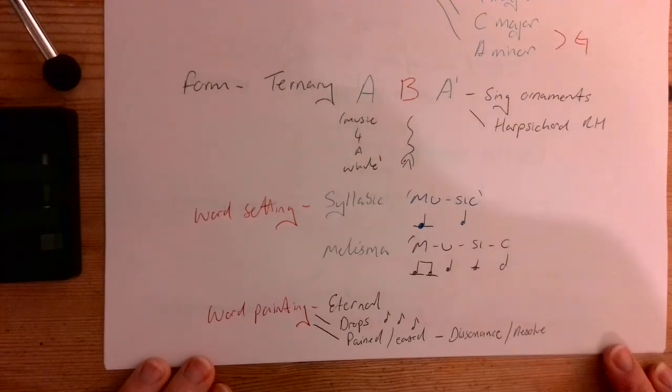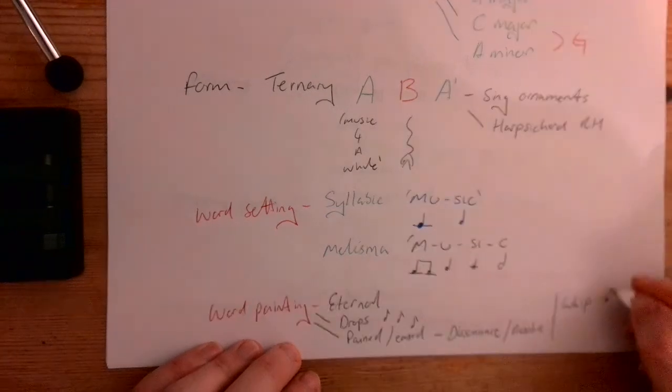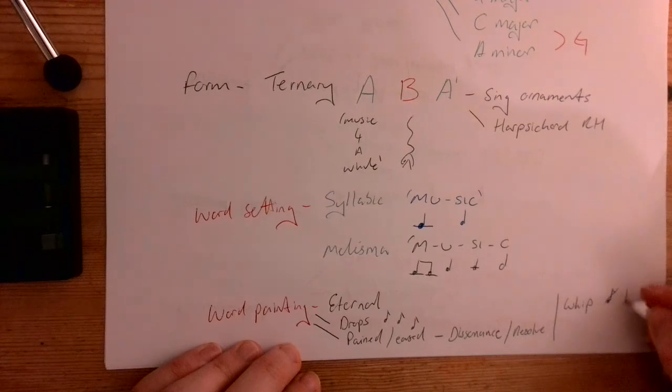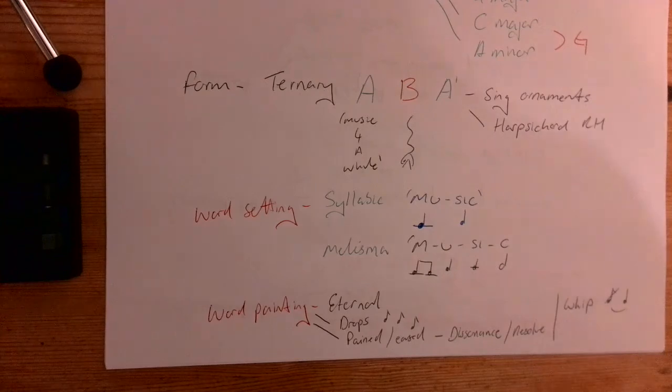What else we've got? We've got one on whip, I think, as well, where we have like an acciaccatura, which is a note that's got a little strike for it, which means it's really, really quick. And then the normal note, so it almost makes like a sound like a whip would do, because it jumps really quickly from that note to the other note.